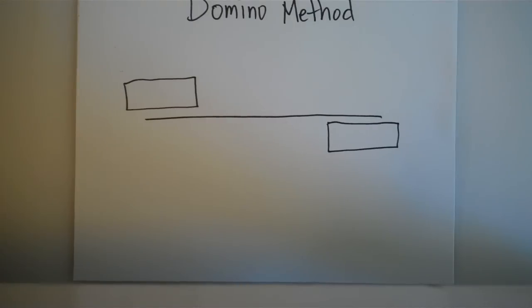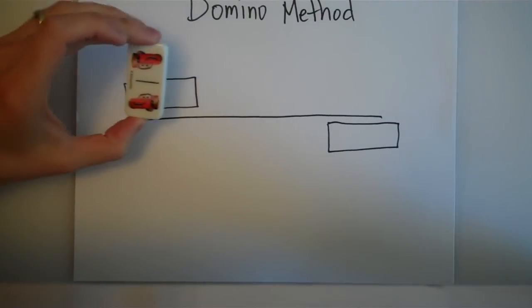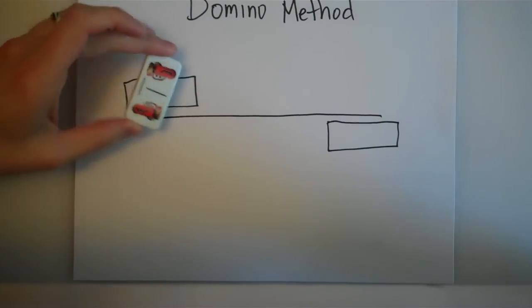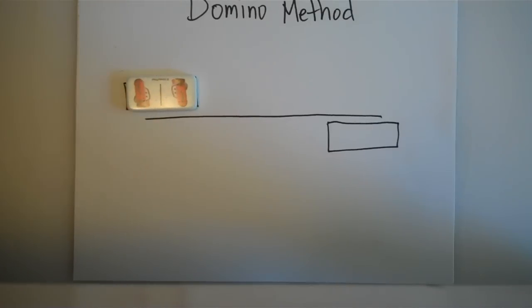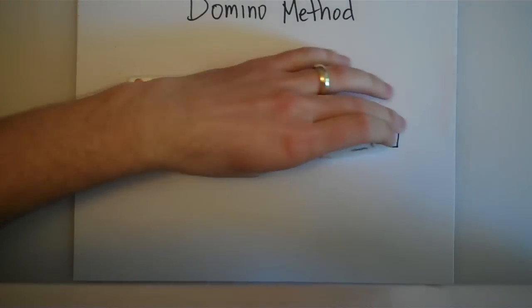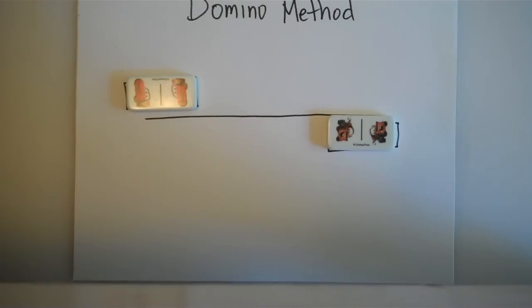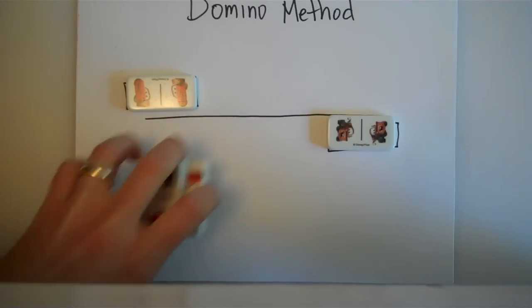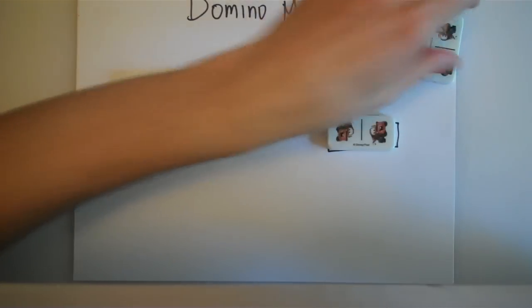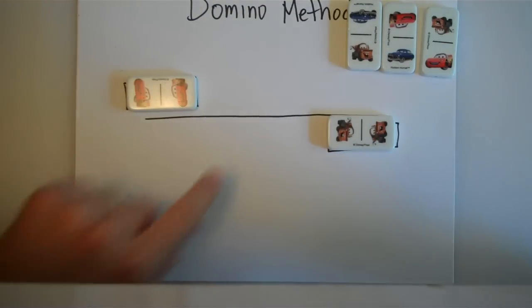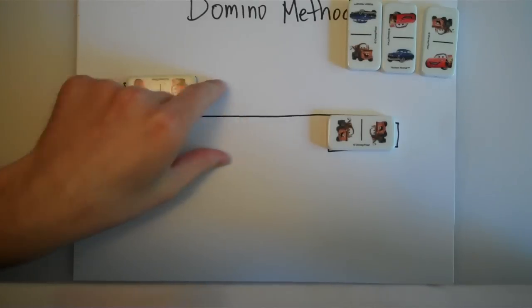To start out, I like to use dominoes with symbols. Here we have Lightning McQueen - we're going to put Lightning right here in the top left hand corner. On the bottom right we're going to put Mater. Because we have dominoes, we have a bunch of these different dominoes.